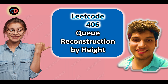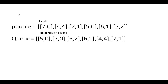LeetCode 406 - Queue Construction by Height. The elements for Example 1 are: [7,0], [4,4], [7,1], [5,0], [6,1], [5,2]. Each element has two attributes: the height of that person and the number of folks standing in the queue with a height greater than or equal to this person's height. The starting queue element has five at it and zero people have a height greater than five in front of this person.